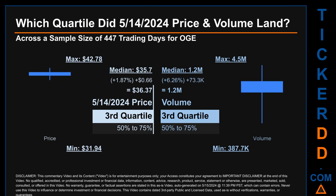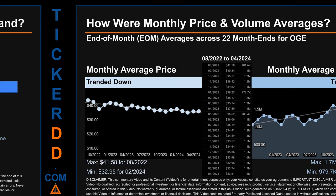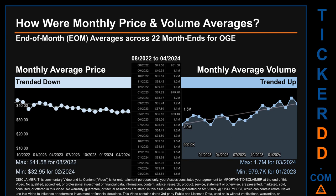Quartiles tell us about the spread of a data set by breaking it into quarters, just like how the median breaks the set into half. OGE has a median price of $35.70, therefore May 14th, 2024 price was higher than that middle marker by 1.87%. The day's volume of 1.2 million was more than the median by 6.26%.